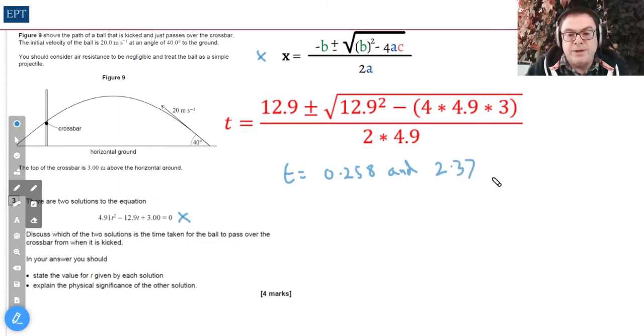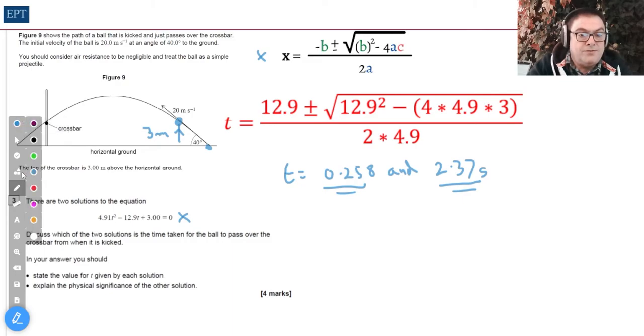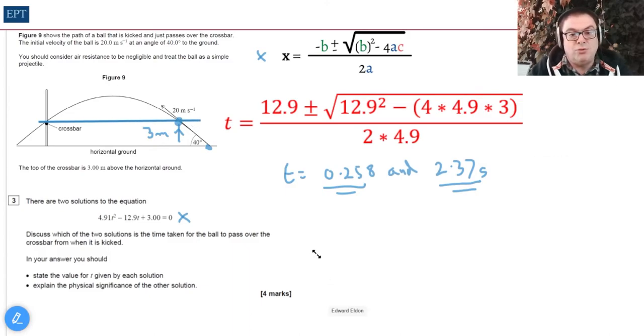Both of those are to two significant figures and of course in seconds. So what do these two numbers mean? Well, the actual time that our ball will have taken to cross over that crossbar is 2.37 seconds, and the first value, the smaller value, is the time taken for the ball to reach the first point when it is the same height as the crossbar. If you stop and think about it, it's going to go through a height of three meters twice in its journey. So this is the first time and that's the second time.